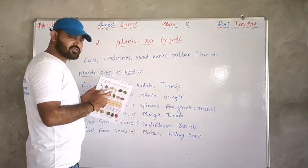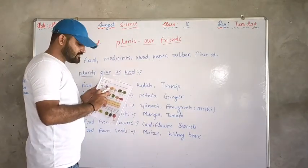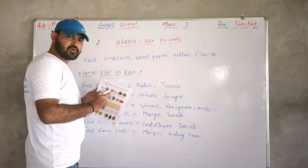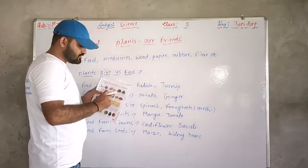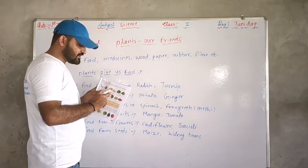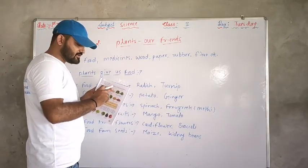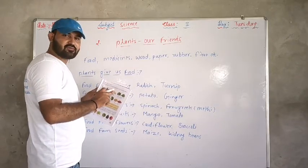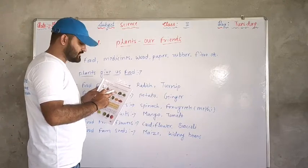Potato (aloo), ginger (adrak) — this is a stem. This is a stem category. Potato and ginger grow below the ground but they are actually stems.